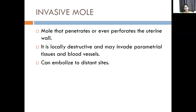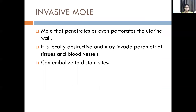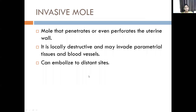There is another entity — the invasive mole. A mole that penetrates or even perforates the uterine wall is called an invasive mole. It is locally destructive and may invade parametrial tissues and blood vessels, and sometimes can embolize to distant sites. When a normal mole penetrates more into the uterine wall, it is called invasive.